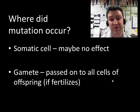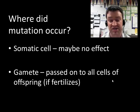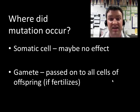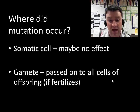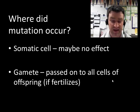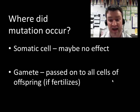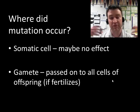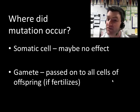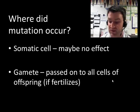It also matters where in the organism the mutation occurs. In certain somatic cells a mutation might be very destructive, but those somatic cells can often be replaced by neighbors that don't have the mutation. Gametes are of particular interest because if those sperm or egg cells go on to fertilize, then the offspring will have that mutation in every single one of their cells, since that original DNA is copied through multiple rounds of mitosis.